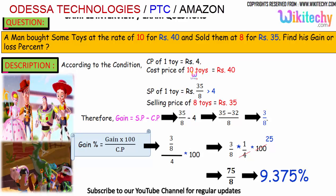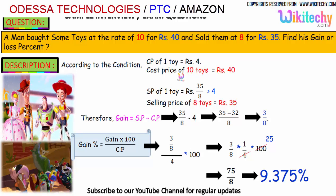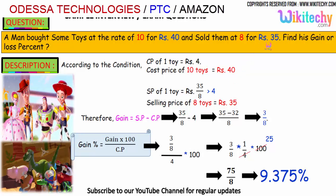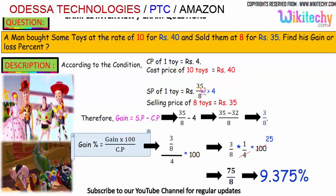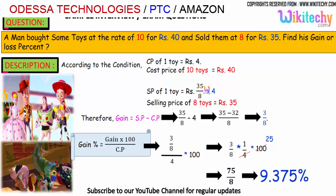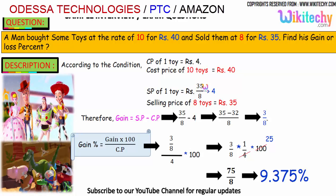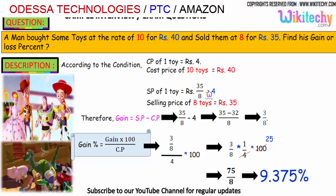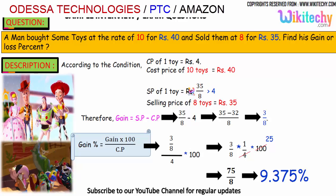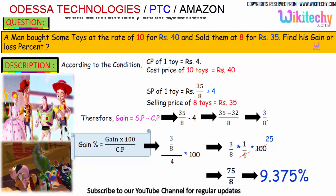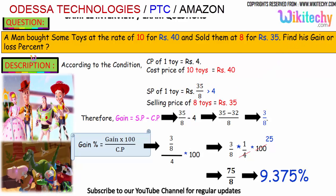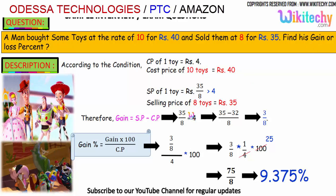The cost price of 10 toys is 40, so 1 toy is 4 rupees. The selling price of 8 toys is 35, so the selling price of 1 toy is 35 divided by 8, which is greater than 4. So it should be a gain for him — the answer is gain, not loss.